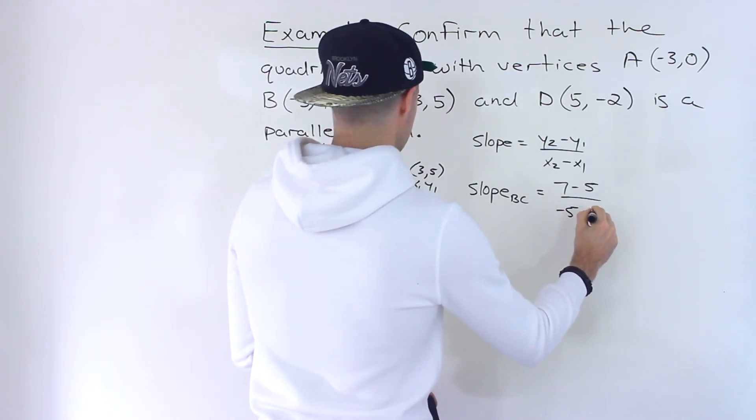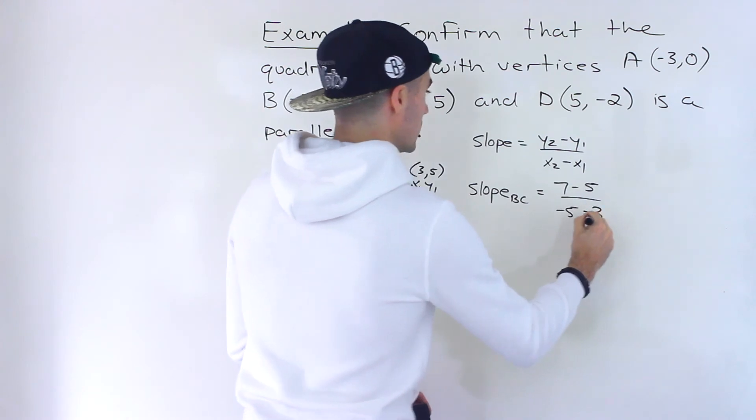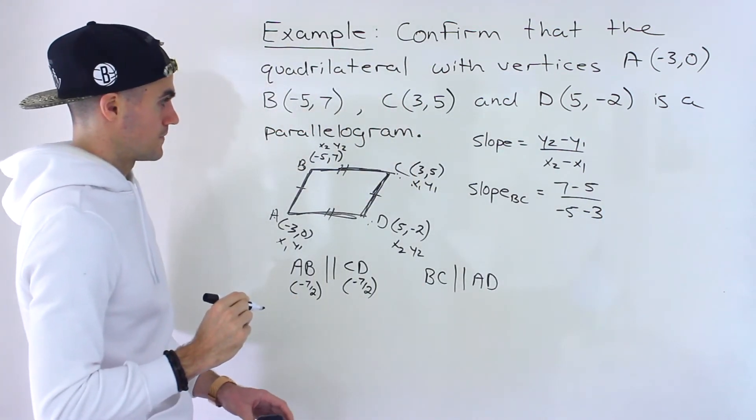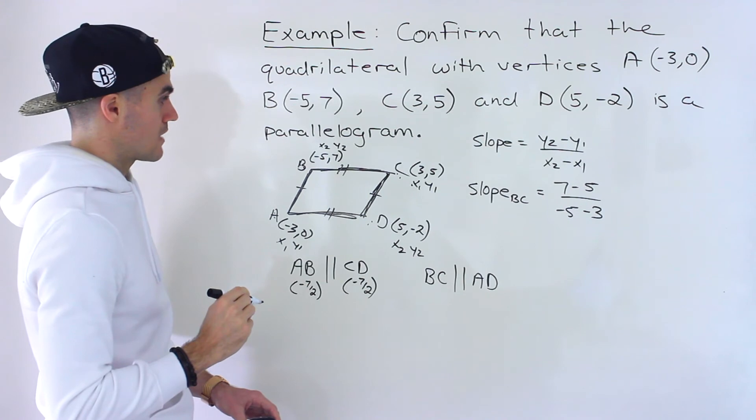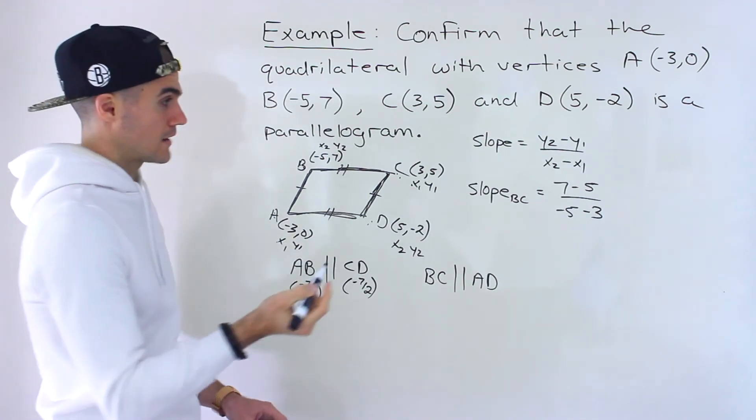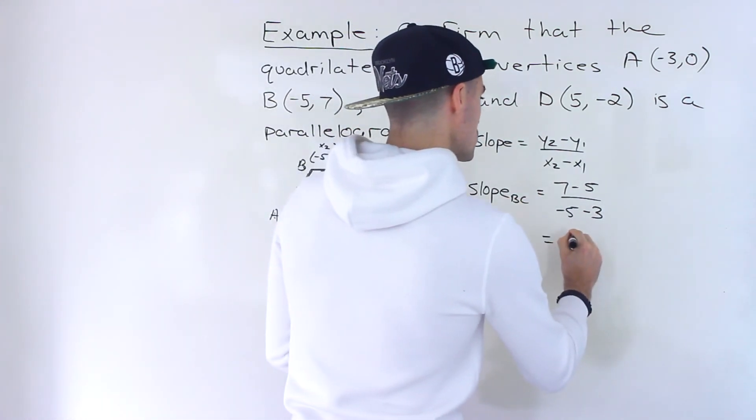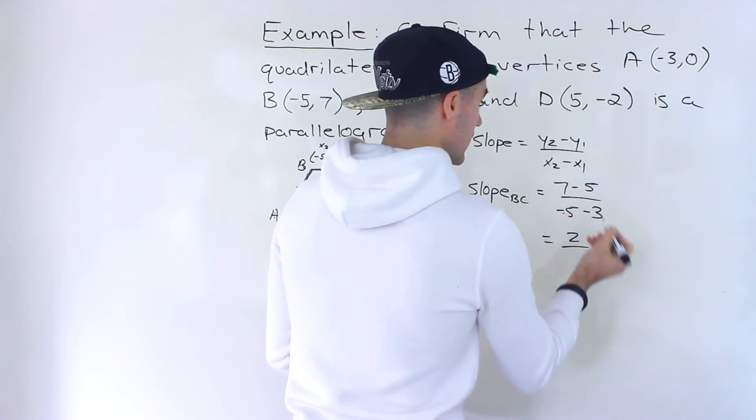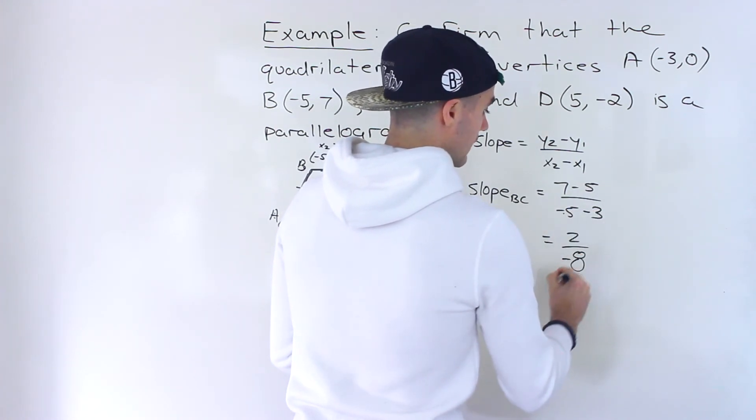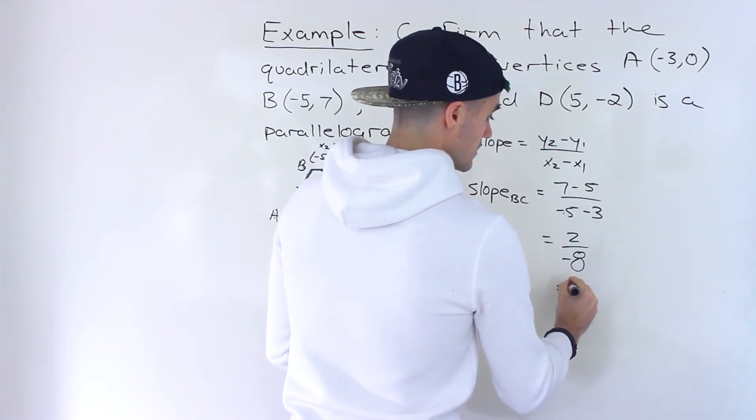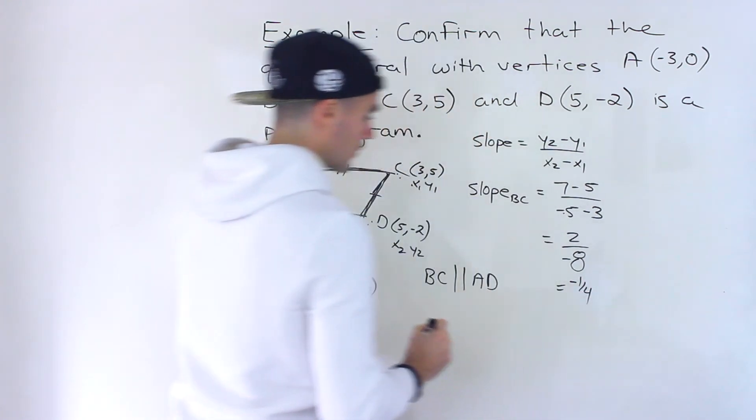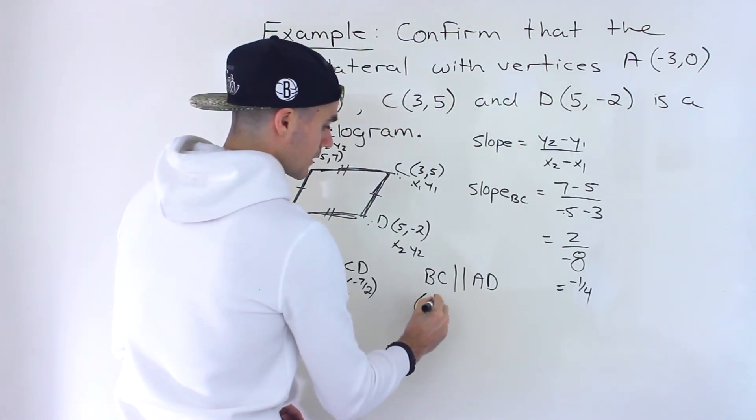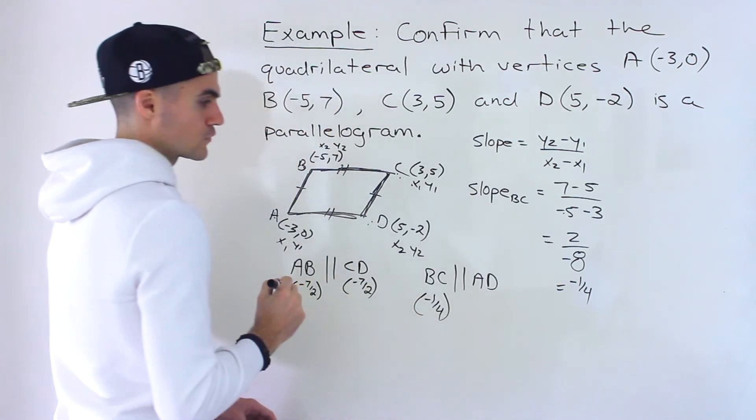7 minus 5, -5 minus 3. This gives us 2, -5 minus 3 gives us -8. And then this simplifies to -1/4. So the slope of BC is -1/4.